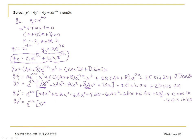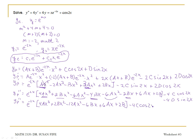Let me simplify and combine like terms. I have 4ax cubed. My x squared terms: 2bx squared is the only b x squared; negative 6ax squared and another negative 6ax squared combine to give negative 12ax squared. Negative 6bx and negative 4bx wait — negative 6bx and positive 8bx combine to give plus 2bx. I have plus 6ax, plus 2b, then my cosine term and my sine term.